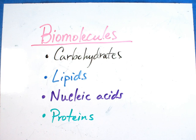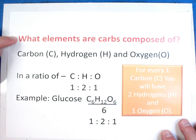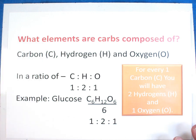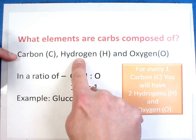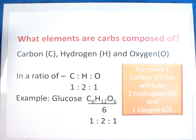Let's start first with carbohydrates. What elements are carbs composed of? Now, what you may want to do each time I get to a page, you may want to pause, write the information down, and then watch me go through it to make sure you understand everything you've written. Carbohydrates are going to be composed of carbon, hydrogen, and oxygen.